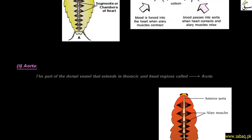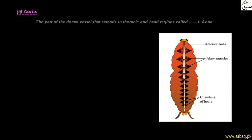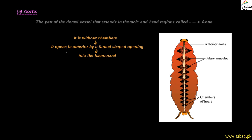The aorta is the part of the dorsal vessel that extends into the thoracic and head region. If we look further into the aorta, we can see that it has no chambers. The anterior region is open in a funnel shape, opening into the hemocoel — the body cavity seen as a reddish-orange region in the diagram.